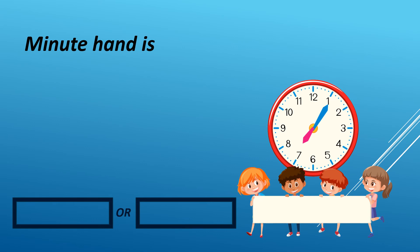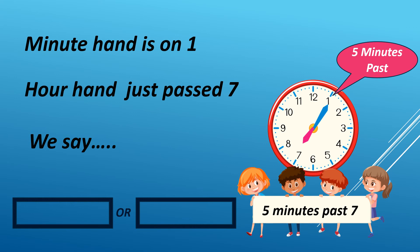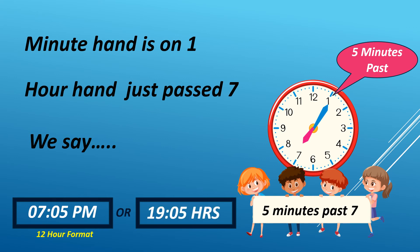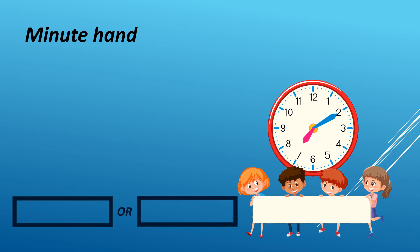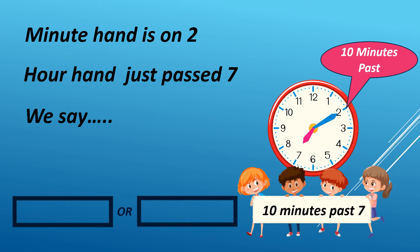When the minute hand is on 1 and the hour hand just passed 7, we say 5 minutes past 7. It can either be AM or PM. For example, it is 7:05 PM in 12-hour format. When the minute hand is on 2 and the hour hand just passed 7, we say 10 minutes past 7. It can either be AM or PM. For example, it is 7:10 PM in 12-hour format.